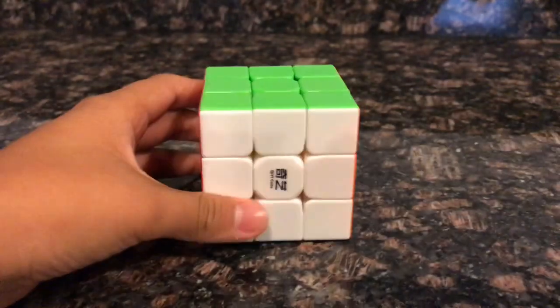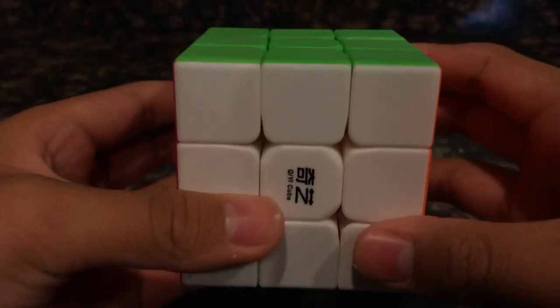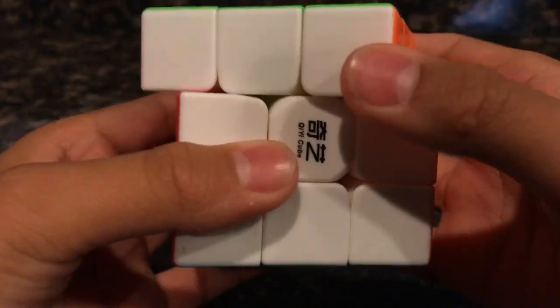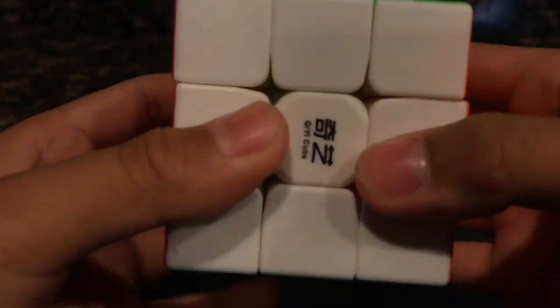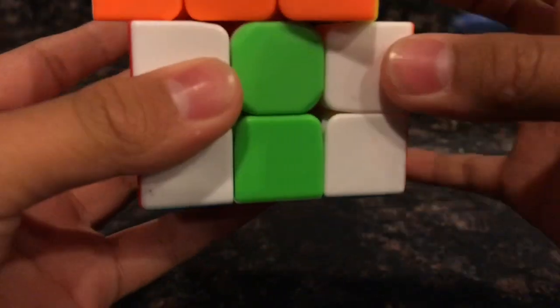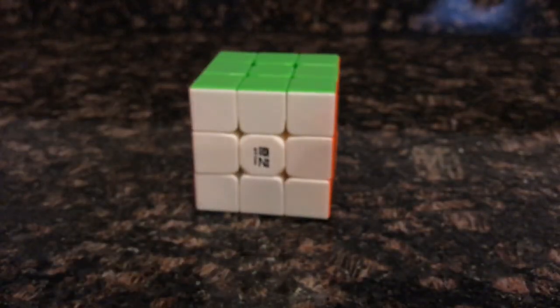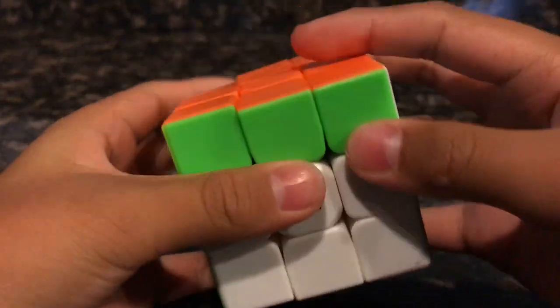Here is the cube. We're gonna do first turns, three, two, one. Oh my gosh, this cube is so smooth! Oh my gosh guys, this cube is so smooth, look at that.